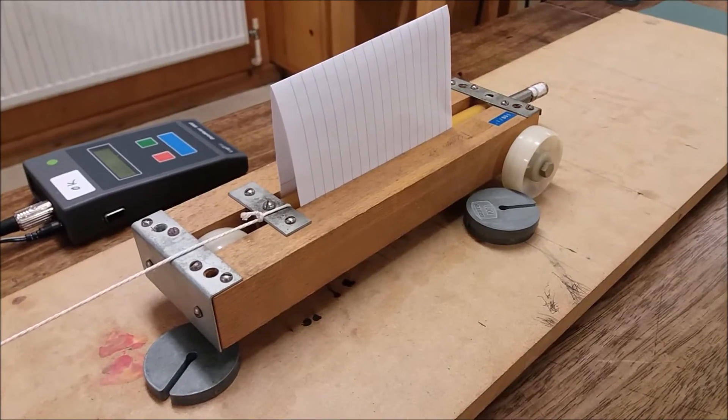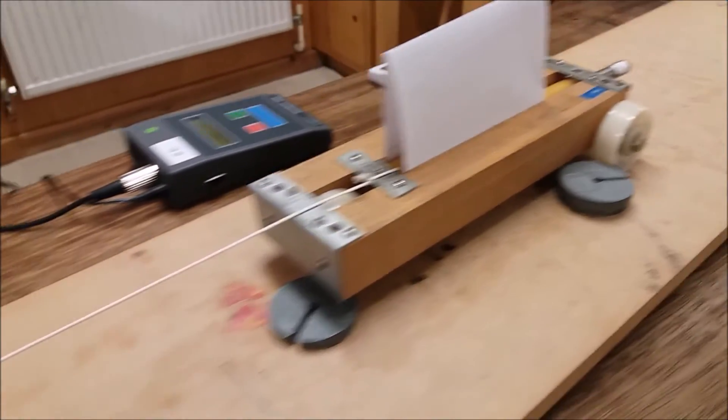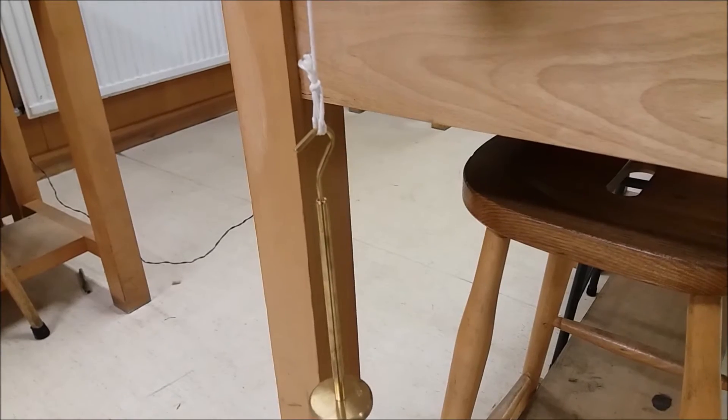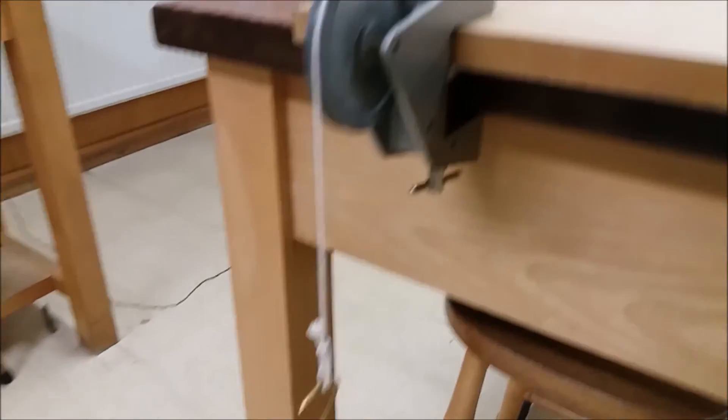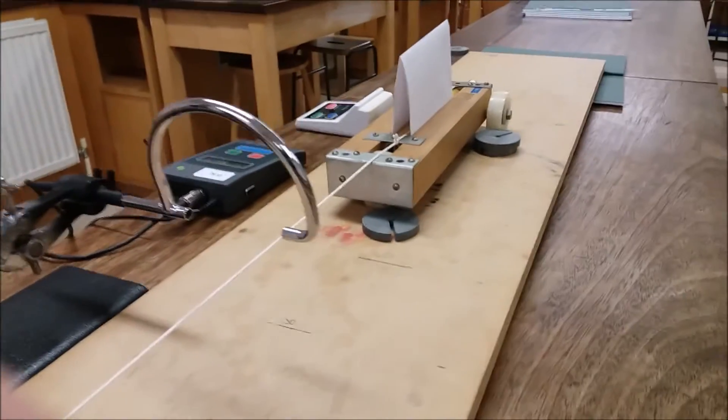Basically, the trolley will be pulled along this ramp by a mass hanging on a thread. Since we're investigating the effect of the mass of the trolley on its acceleration, we're not going to change this mass on the thread, since this is the pulling force and we want this to be the same.